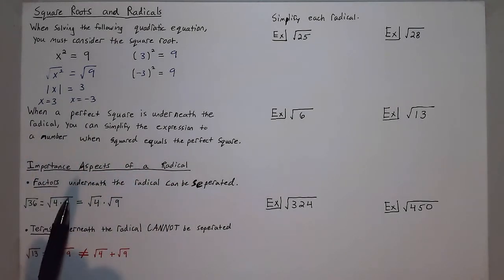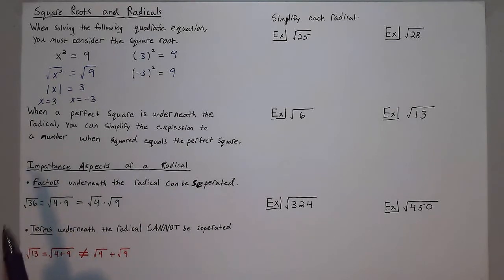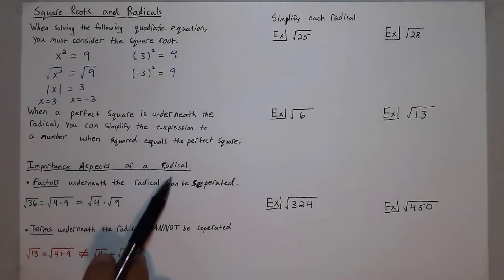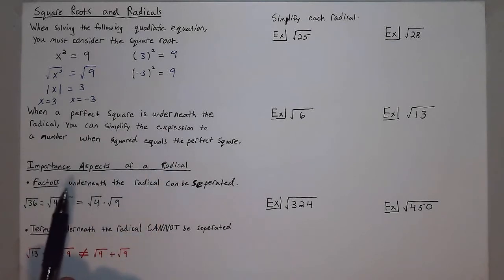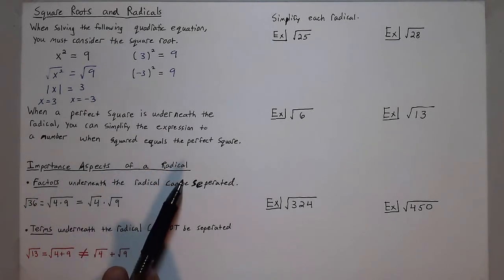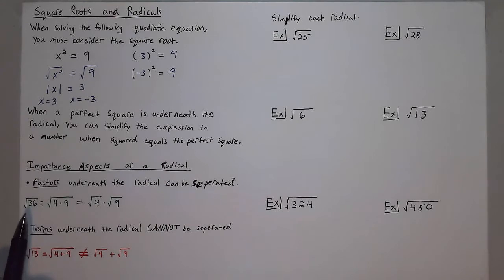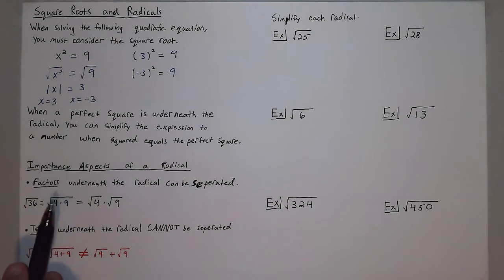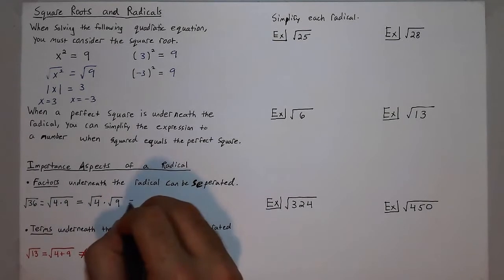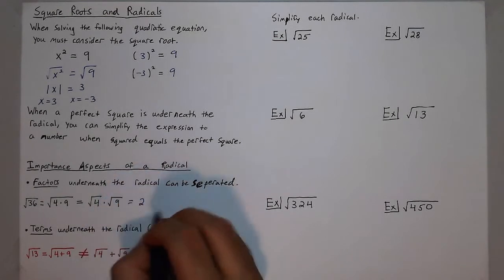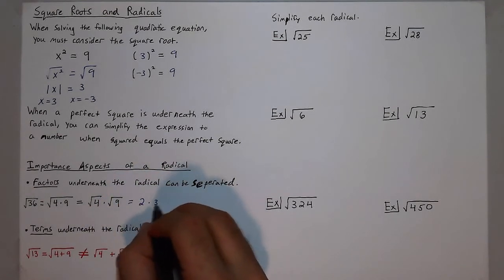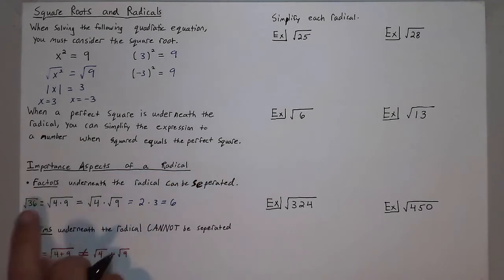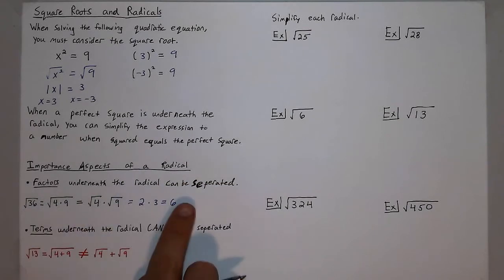So how do you simplify a radical? An important aspect is that factors underneath the radical can be separated. For example, the square root of 36, which is also 4 times 9, can be written as the square root of 4 times the square root of 9, which equals 2 times 3, which is 6 — and indeed the square root of 36 is 6.